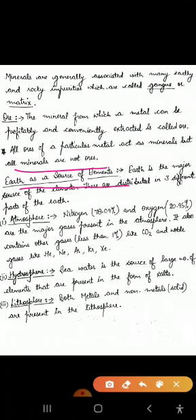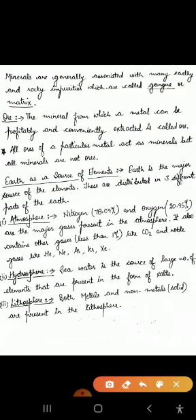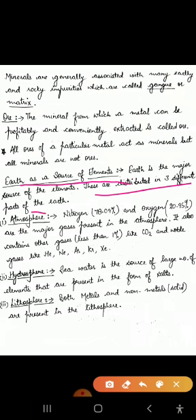Earth as a source of elements — elements are present in the earth's crust. Ocean is also a source of elements. And elements are also present in the biological world, that is in the bodies of animals and plants. We will study these one by one.